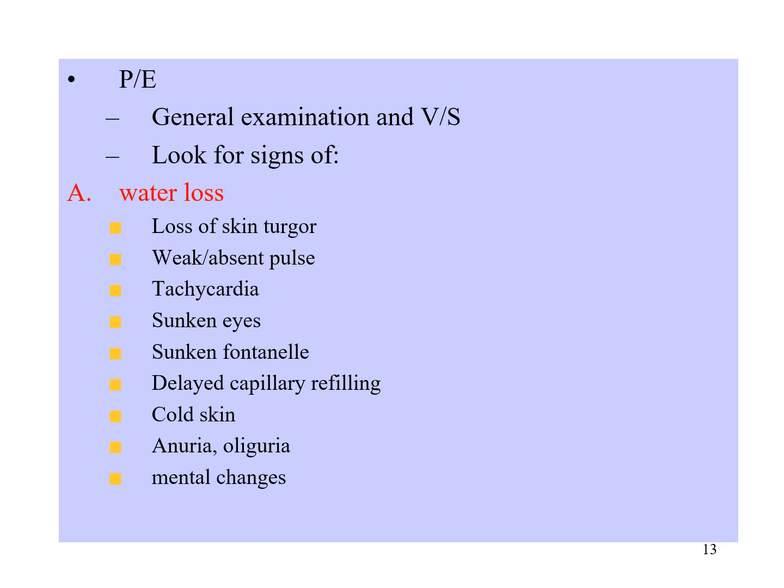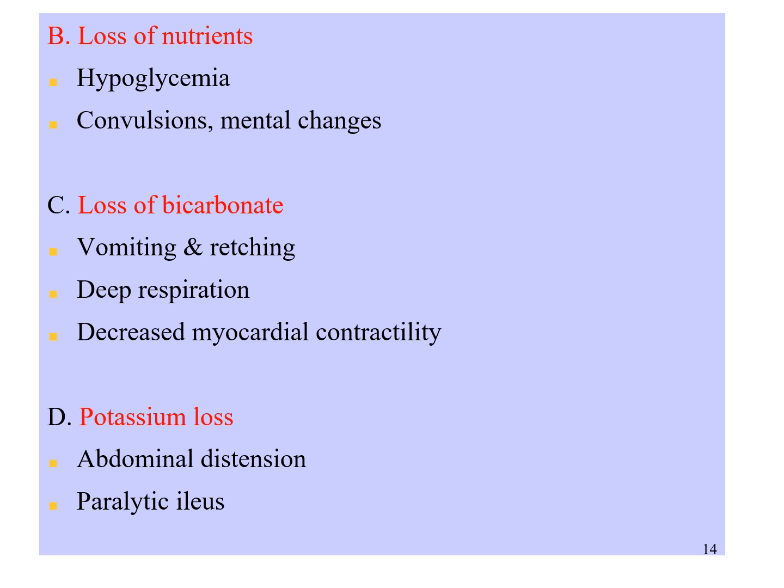In physical examination, we should perform a general examination and check vital signs. We should look for signs of water loss such as loss of skin turgor, weak or absent pulse, tachycardia, sunken eyes, sunken fontanelle, decreased capillary refill, cold skin, anuria or oliguria, and mental status changes. We should also check for hypoglycemia with random blood sugar, check for seizures, and assess for loss of bicarbonate and potassium. Loss of bicarbonate can cause rapid deep respiration and decreased myocardial contractility. Potassium loss is characterized by abdominal distension and paralytic ileus, and can cause cardiac arrhythmia.